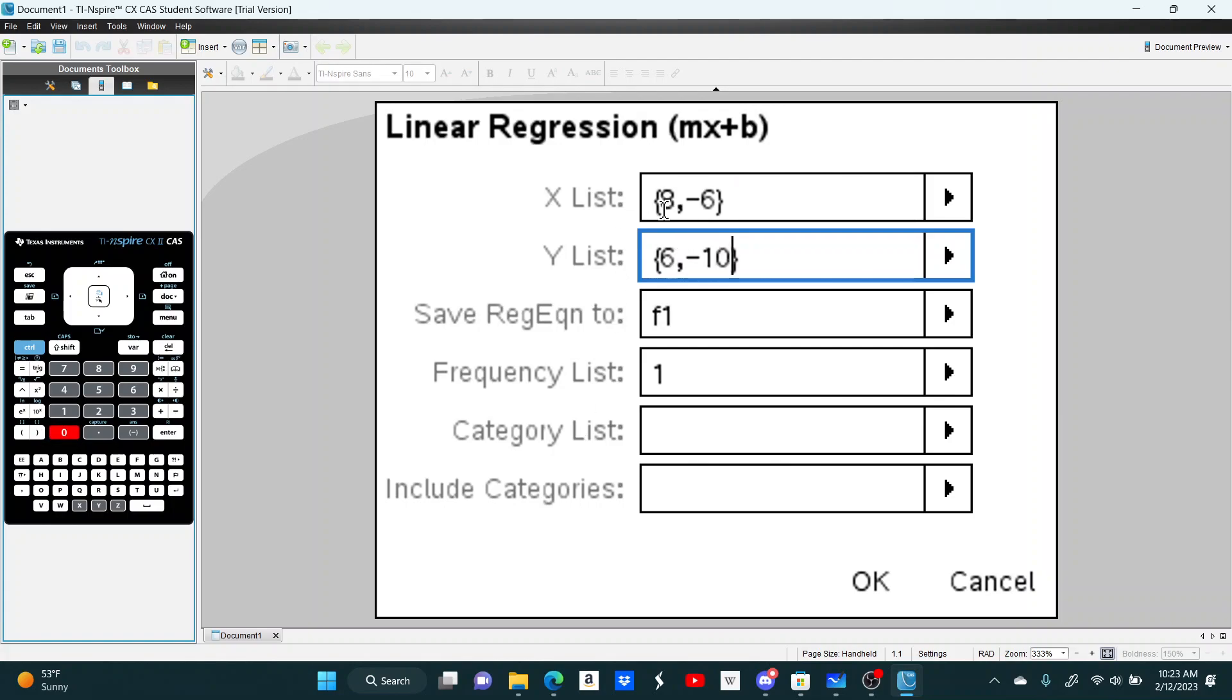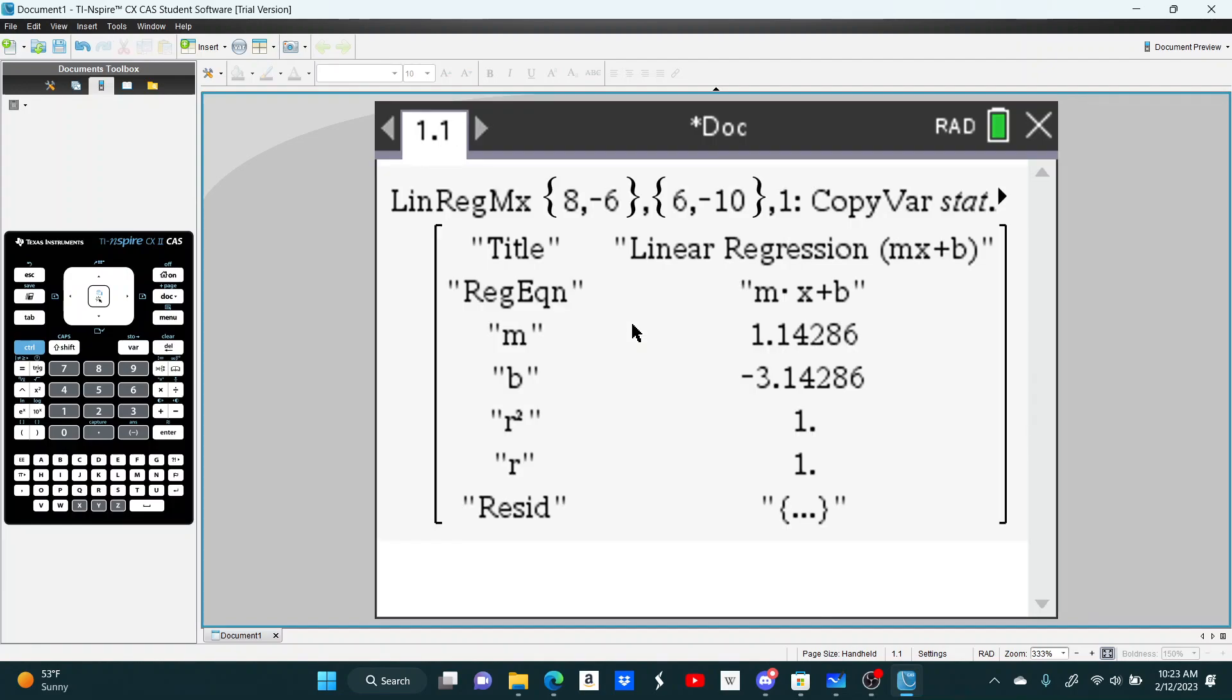The first one in my xlist and the first one in my ylist correspond to 8 comma 6. Before you press OK, or you can also just click Enter down here, always see what this says right here. Save—this stands for regression equation. Save regression equation 2, and in this case it's F1. I'll show you why that's important. If I click Enter or click OK, you get this, right? This is telling you y equals 1.14286x minus 3.14286. And that's the equation.